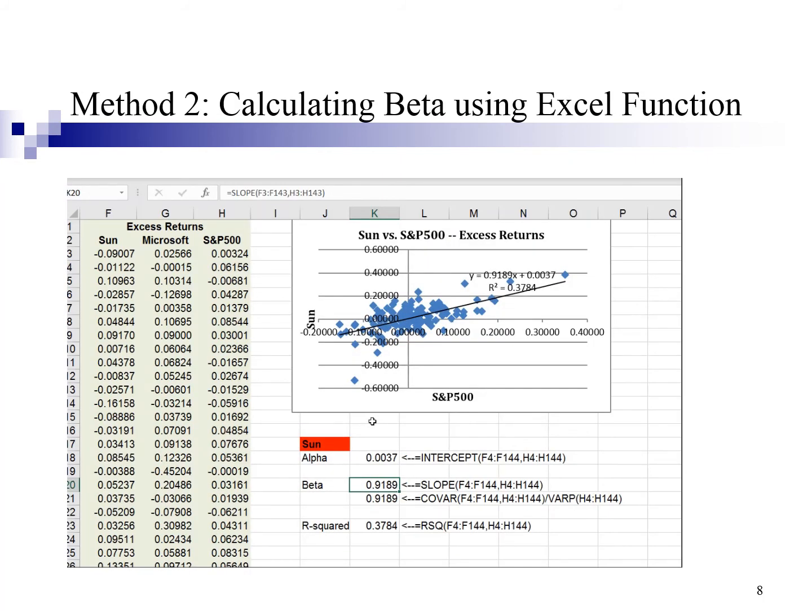Alternatively, you can use Excel built-in formula to calculate the alpha, beta, and R square. The formula for alpha is equal intercept. Highlight the value of Y, then highlight the value of X. Remember that variable Y is the stock excess return. Stock excess return is a dependent variable, which is influenced by the overall market movement. Variable X is always the market excess return. Market excess return is an explanatory variable. The formula for beta is equal slope and highlight variable Y and variable X accordingly. There is a second way to calculate beta, which is the covariance between the stock and the market divided by the variance of the market.